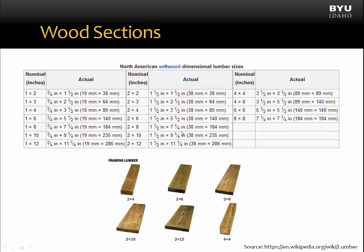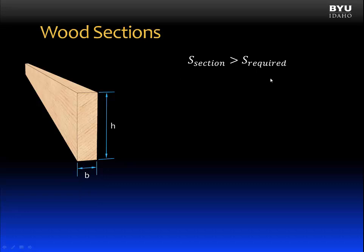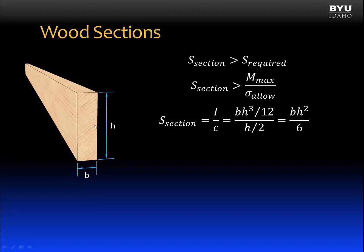When designing wood sections, we will use the section modulus, and the section modulus of the section chosen must be greater than the required section modulus. The section modulus of a board can be calculated using I/c. Since boards are typically rectangular in shape, I equals BH³/12, and c is half the height, H/2. This simplifies to a section modulus of BH²/6 for a rectangular cross section.